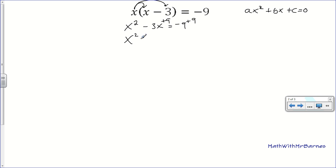So, x squared minus 3x plus 9 is equal to 0. Now I need to use quadratic formula.